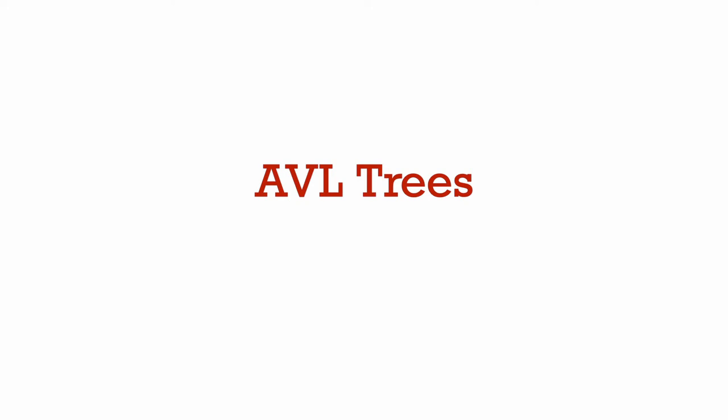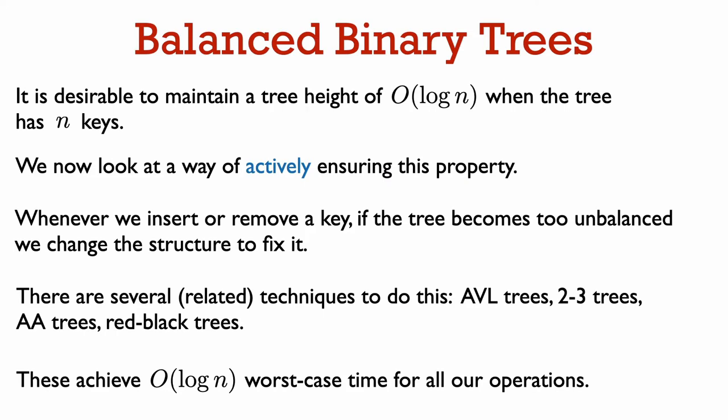In this segment, we look at a way to actively balance a binary search tree as elements are inserted and removed, so that the height of the tree does not grow too large and remains proportional to the logarithm of the number of elements in the tree. We know that a binary tree with n elements is always going to have height at least log n. We need log n levels in a binary tree just to store n elements. We are now going to see how to actively balance the tree so that its height is always proportional to log n.